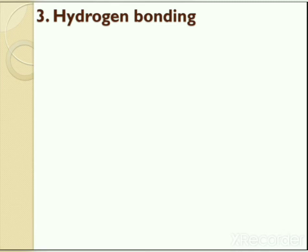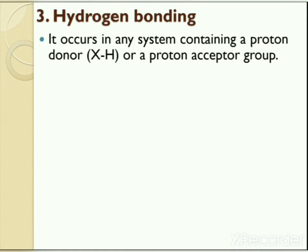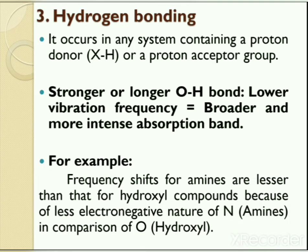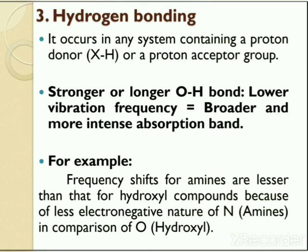The next factor is hydrogen bonding. Hydrogen bonding occurs in any system containing a proton donor or proton acceptor group. The stronger the hydrogen bond, the lower the vibrational frequency, and the broader and more intense the absorption band. For example, NH-stretching frequencies of amines are also affected by hydrogen bonding, similar to the hydroxyl group, but the frequency shifts for amines are lesser because nitrogen is less electronegative than oxygen, making hydrogen bonding in amines weaker.